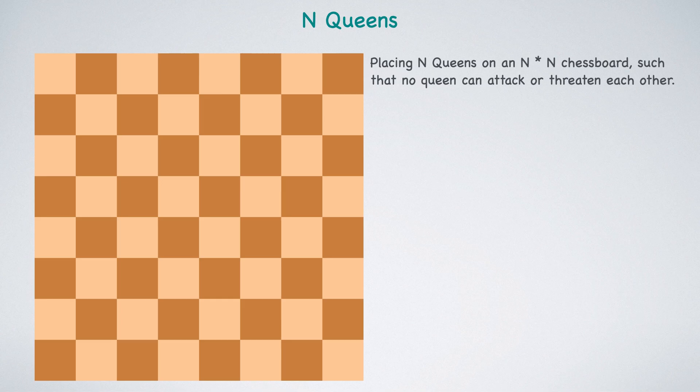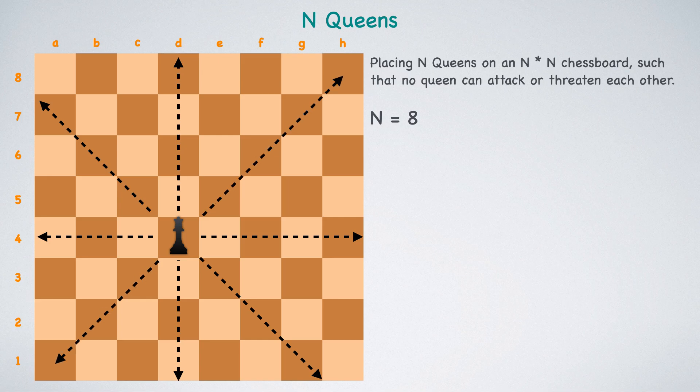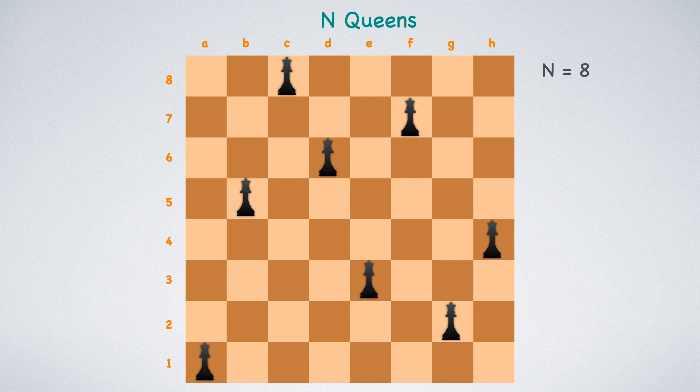For this chessboard, N is equal to 8, totaling 64 squares or cells. I'll designate row numbers and column alphabets in the standard chessboard convention. Let's consider the placement of a queen at position 4D. Adhering to the standard rules of chess, no other queen can occupy the same row, column, diagonal or anti-diagonal as this one, otherwise they threaten each other. Our goal is to place a total of N queens while honoring these constraints.